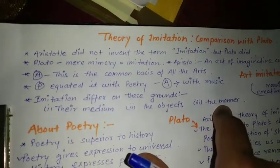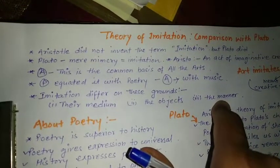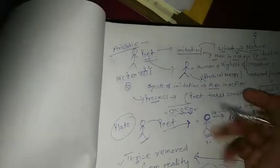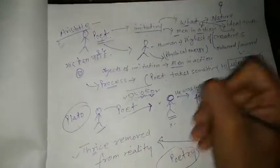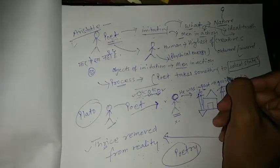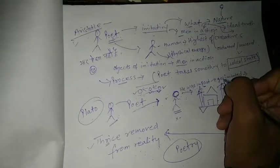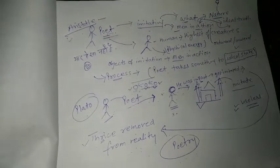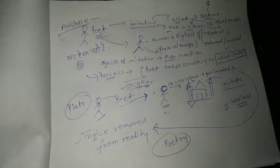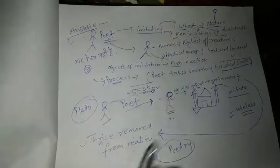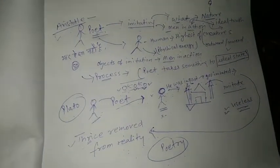It is not merely imitation, but we are imitating some ideal state so that we can achieve that ideal state. So this is the difference between Plato and Aristotle's theory. And here comes the theory of imitation.